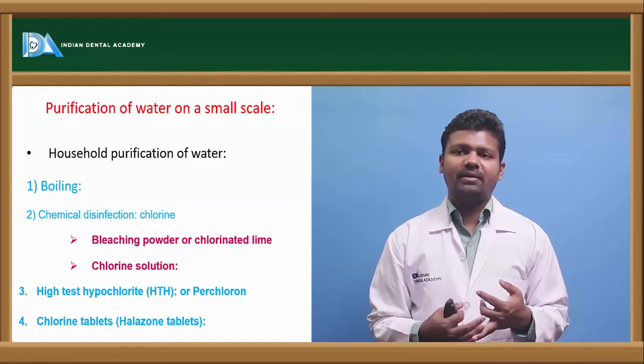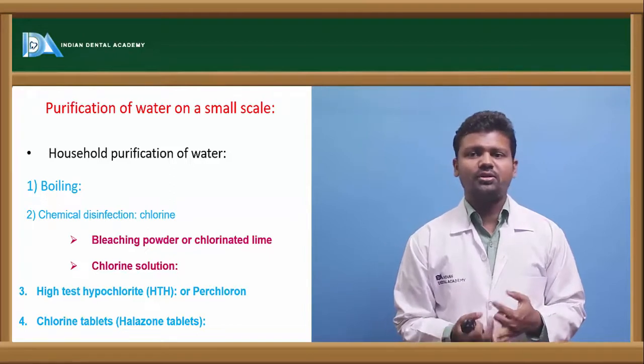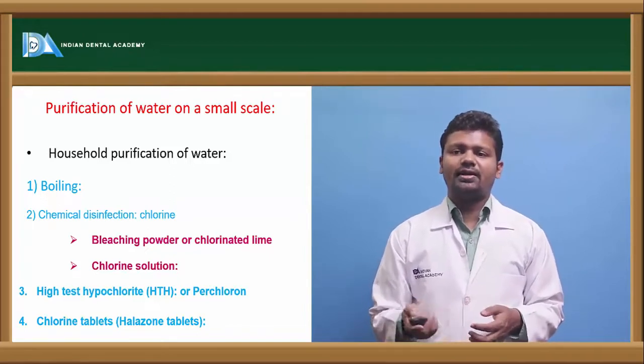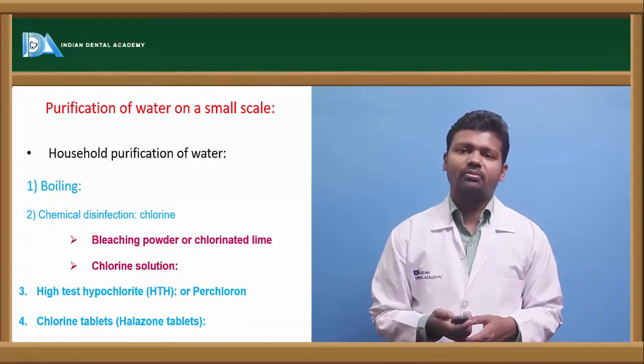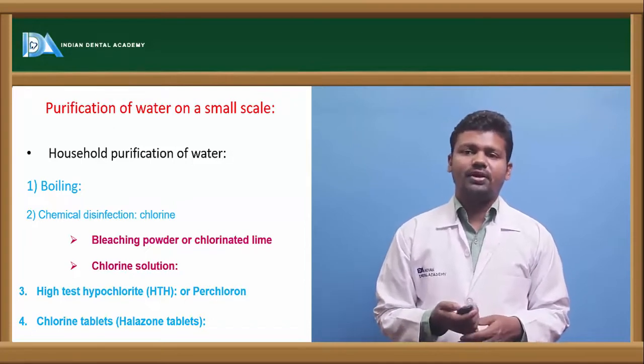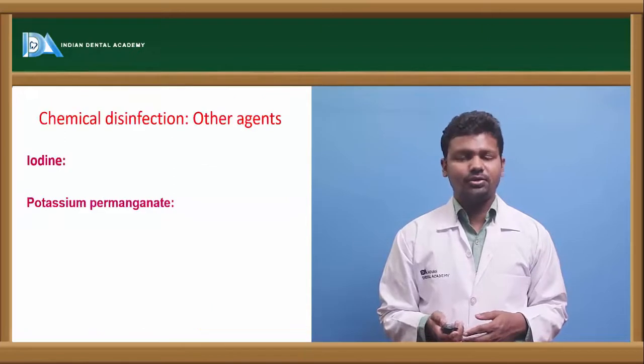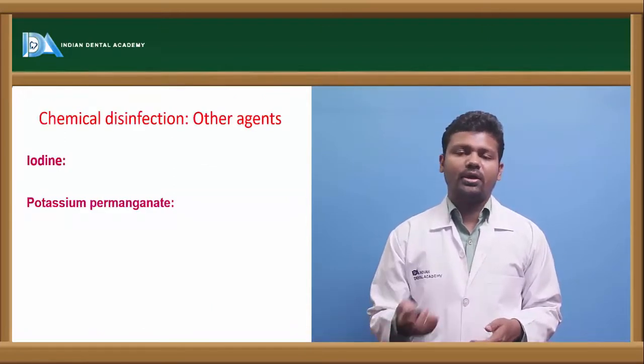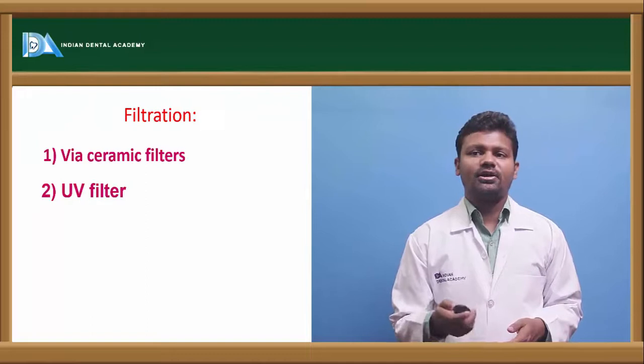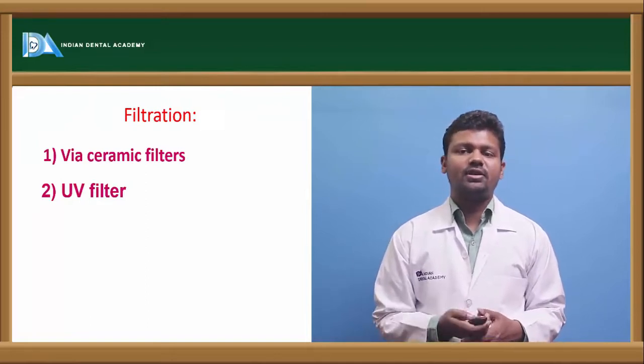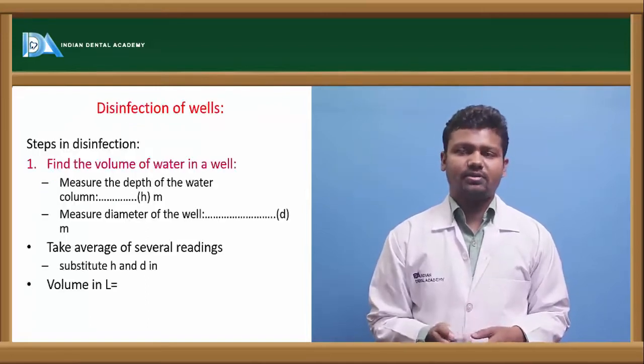Whereas chemical disinfection - bleaching powder or chlorinated lime can be used and chlorine solution can be used. High test hypochlorite or perchloron can be used for small scale filtration of water and chlorine tablets in the form of halazone tablets are used. Chemical disinfection can be done through iodine and potassium permanganate. Whereas filtration via ceramic filters and UV filters can be done.